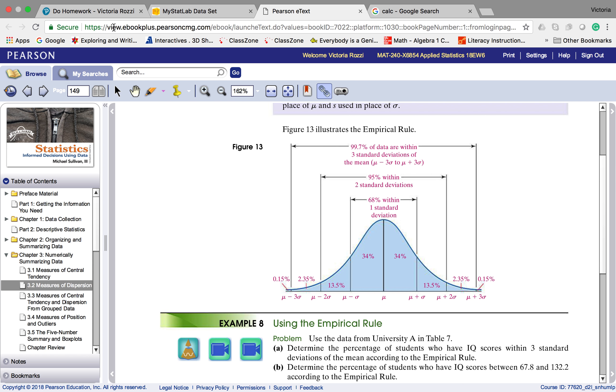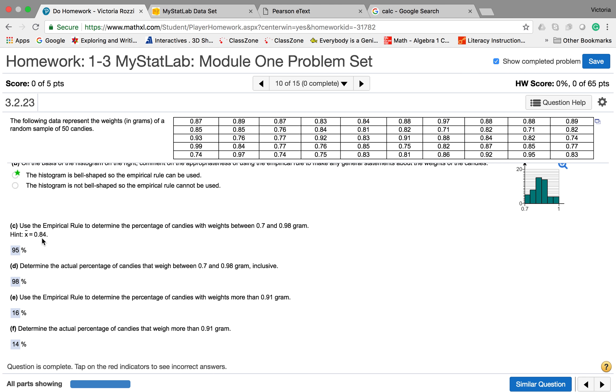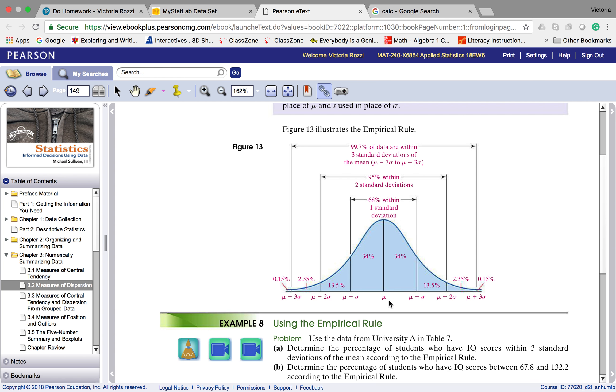They tell us that the mean is 0.84. So that's going to be this middle number here. Now, if we keep adding 0.07, one standard deviation from the mean will be taking 0.84 and adding 0.07, this would get us 0.91. So this value here would be 0.91. Then if I add another 0.07, that gets me to 0.98. If I add another 0.07, that gets me to 1.05.